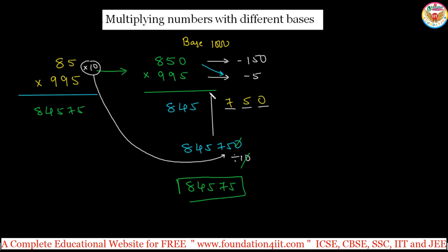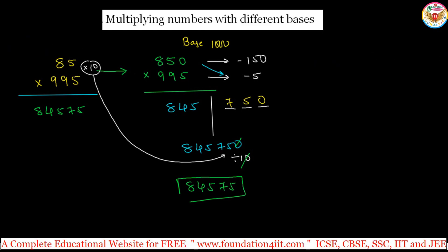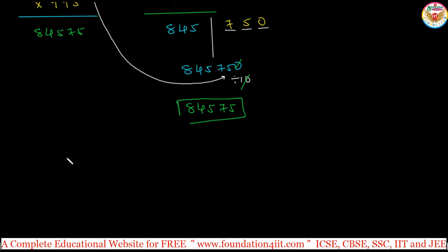The answer for 85 into 995 is 84575—same base method, small change. In calculation, you can do it in your mind instead of this big process while practicing. Let's take one more example: 73 multiplied by 990. Immediately keep in mind, just put a 0. Actually, 73 into 990 is what we're supposed to multiply, but we'll change it to 730 into 990.